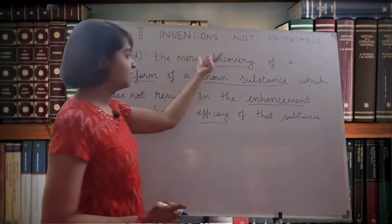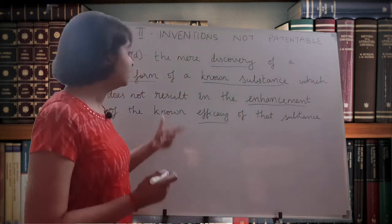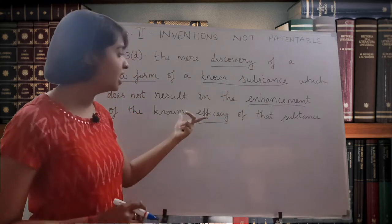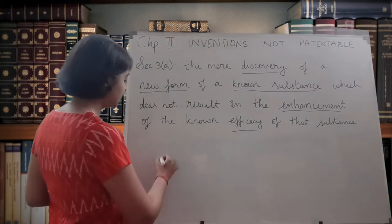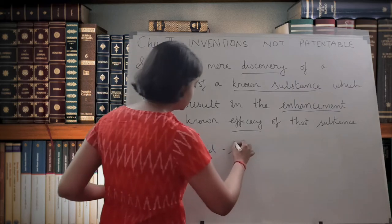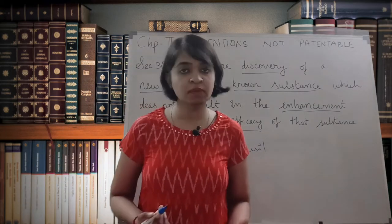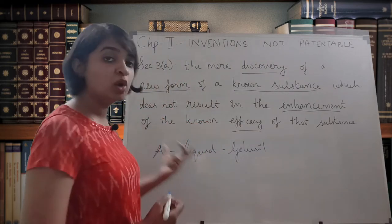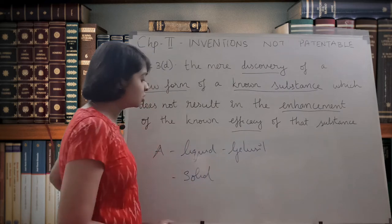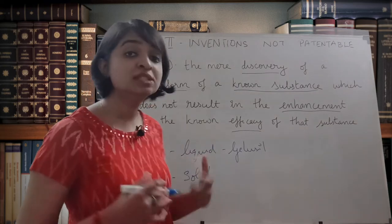So this section says when you're discovering something in a new form of a known substance — something which already exists — and that new form doesn't give any enhancement to its efficacy, patent cannot be granted. For example, suppose A is discovering a product in liquid form. Let's take the example of Gelosil syrup, which is used for treating stomach disorders. Now A is thinking of making it in a chewable tablet — a solid form. When applying for a patent for the solid form, A won't get a patent unless enhanced efficacy is shown.